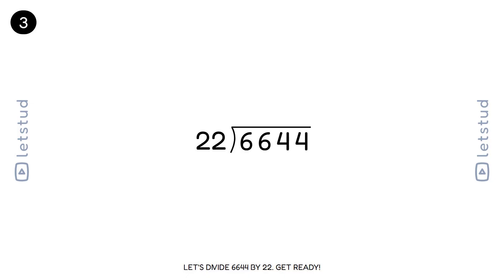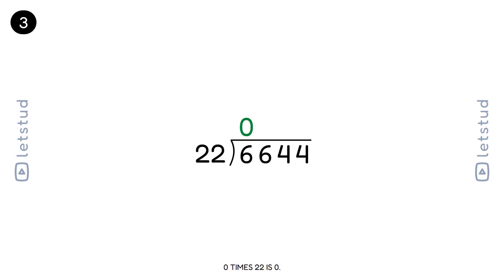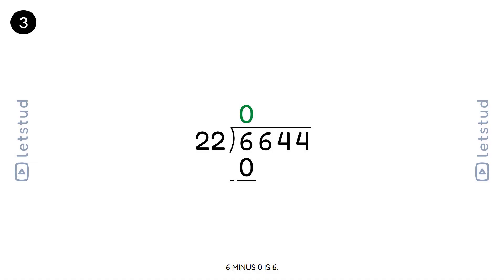Let's divide 6644 by 22. Get ready. We start with the first digit, 6. 22 fits into 6 zero times. 0 times 22 is 0. 6 minus 0 is 6. You're off to a brilliant start.